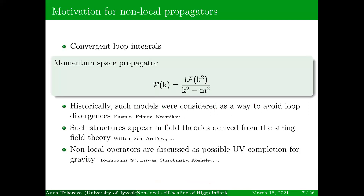This idea was exploited by us to heal the Higgs inflation model. Historically, such models were considered as a way to avoid loop divergences around 40 or 50 years ago by Russians: Kuzmin, Yefimov, Krasnikov. Such structures with functions of box also appear in field theories derived from string field theory and are commonly used in studies of string field theory.